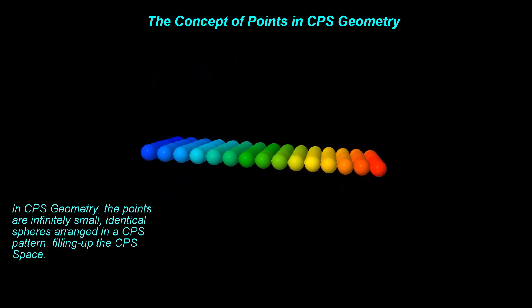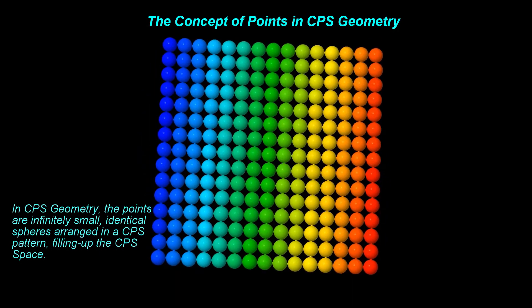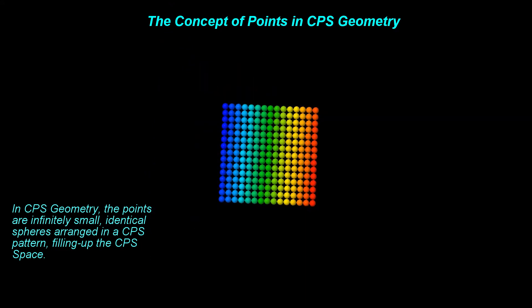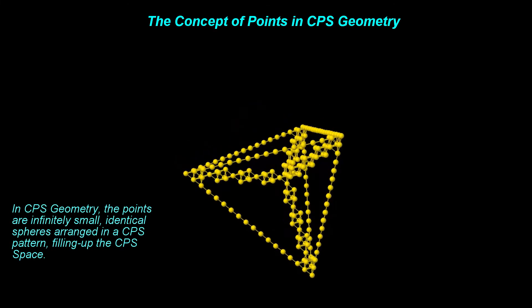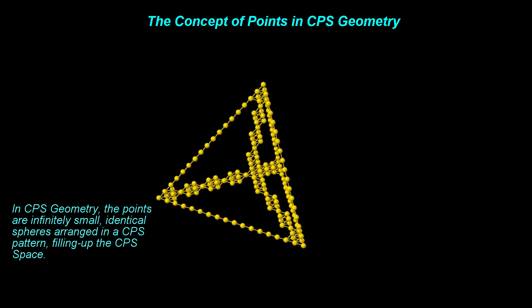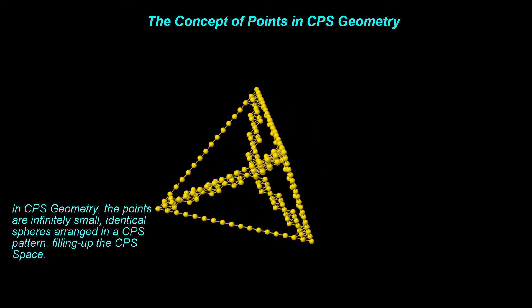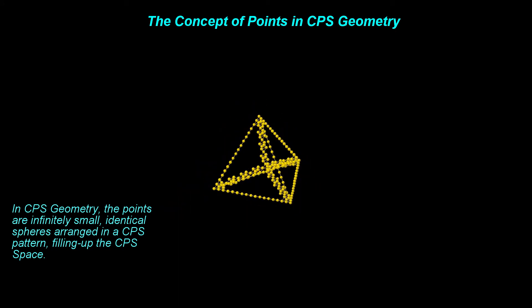To escape this paradox, let's associate a shape to the points, let's consider them as being spherical. For size, let's consider the spheres as being infinitely small, or in other words, infinitesimal spheres.